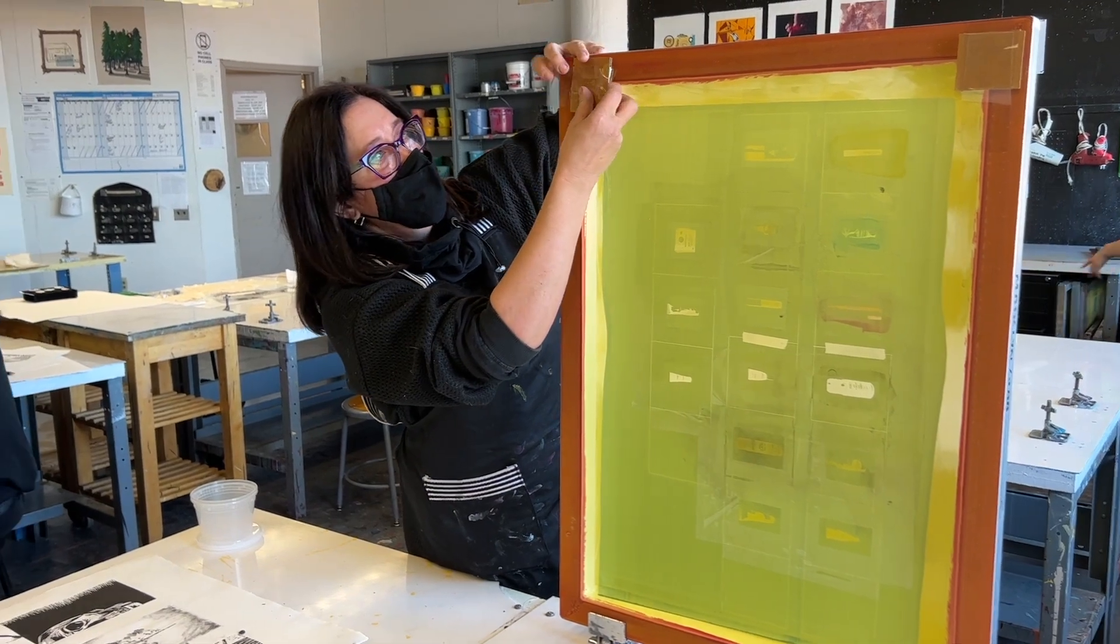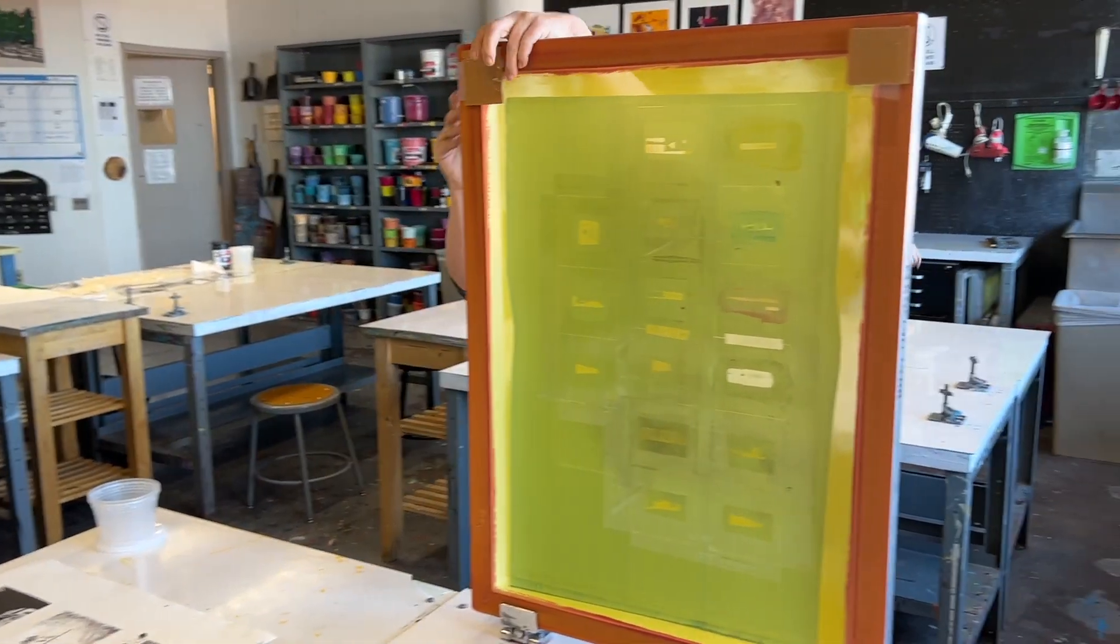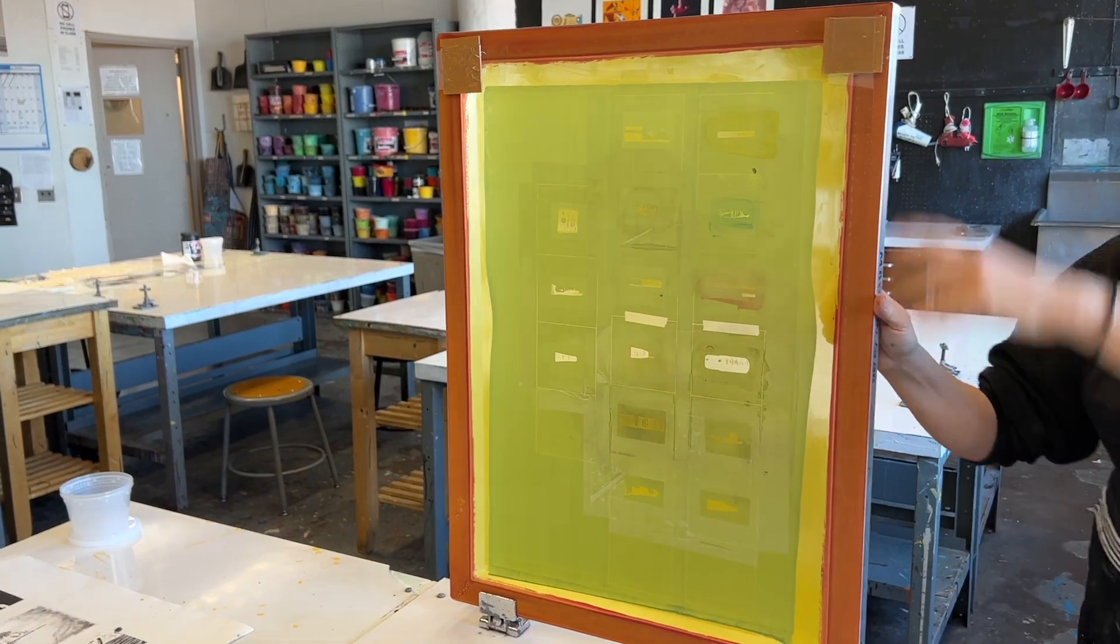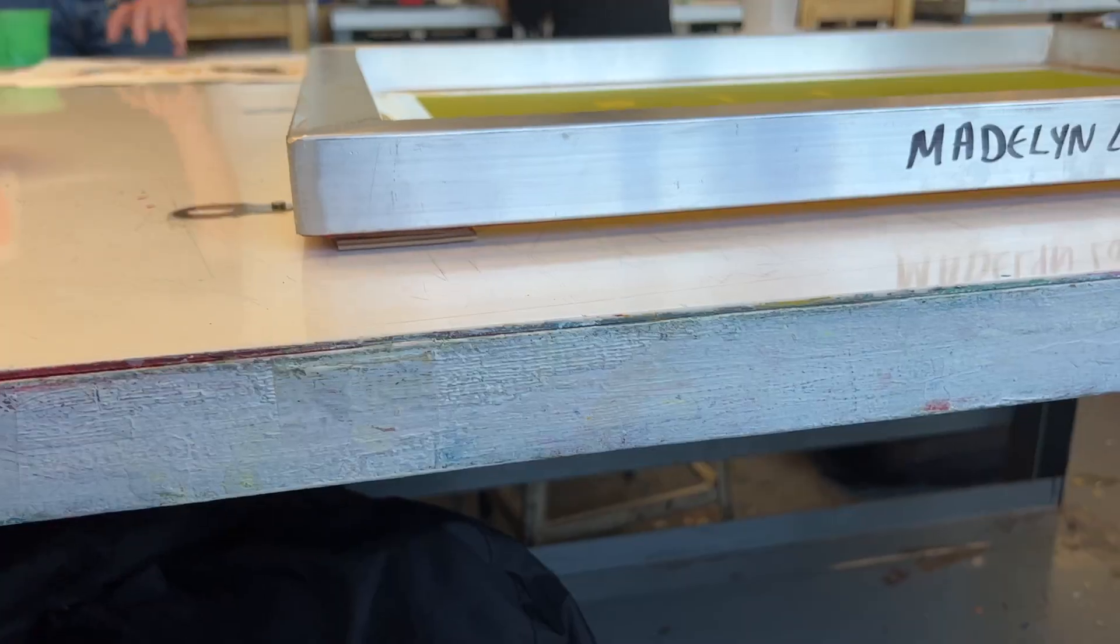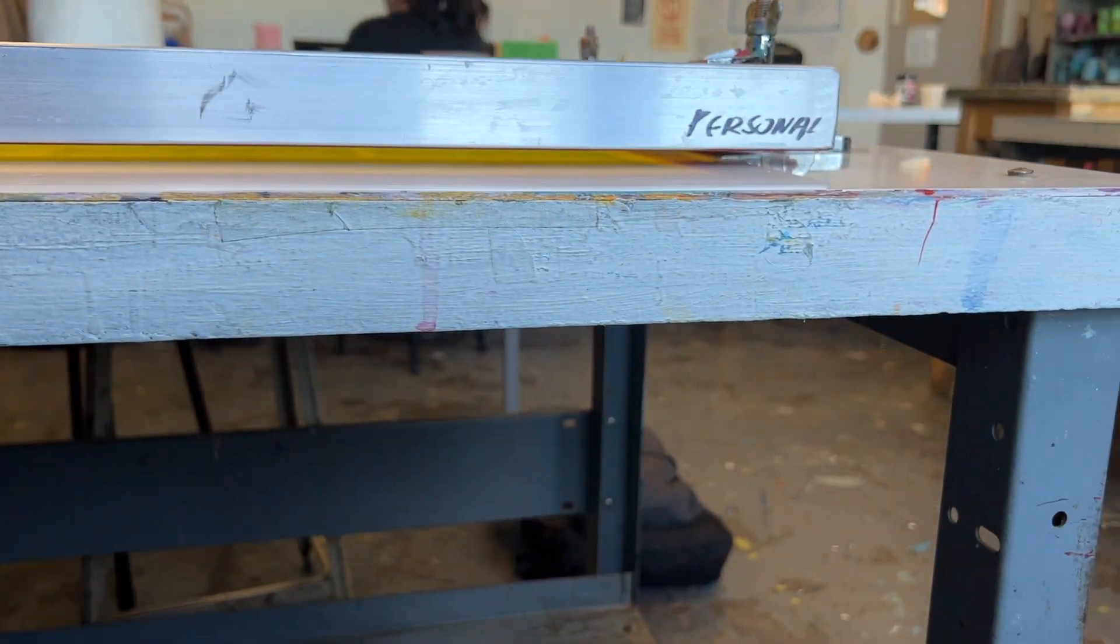So this is the easiest way I've found to level the screen, and always make sure that when you're pulling, it's the same consistency as you can see it for snap back.